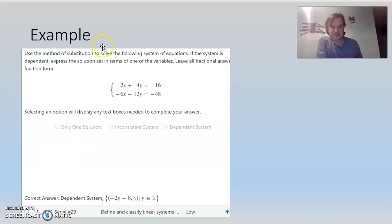So let's just take the system we have, which is 2X plus 4Y equals 16, and negative 6X minus 12Y equals negative 48. So let's use elimination instead. So I'm going to come up here, I'm going to work this out, and I'm going to say elimination.